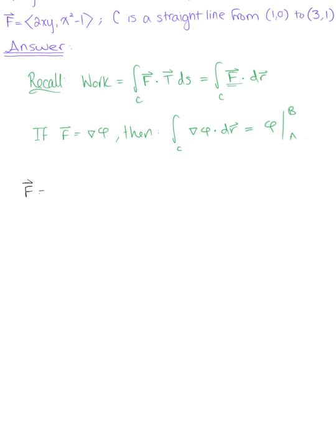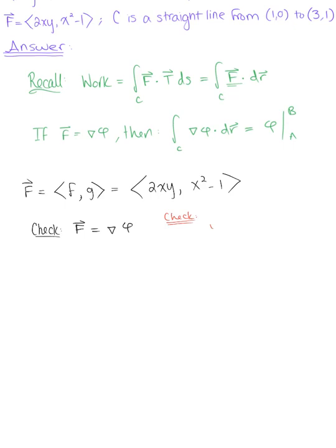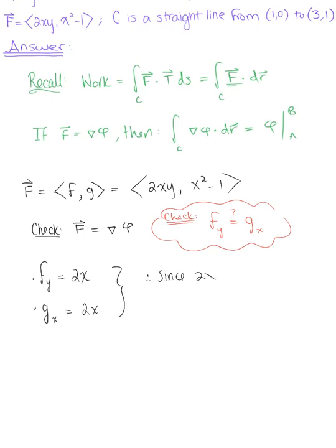We are given our force field in R2, defined by components F and G, where F is 2xy and G is x squared minus 1. We want to check if this is conservative. We need to verify that the partial derivative of F with respect to y equals the partial derivative of G with respect to x. The partial derivative of F with respect to y gives us 2x, and the partial derivative of G with respect to x also gives us 2x. Since 2x equals 2x, F is a conservative force field.